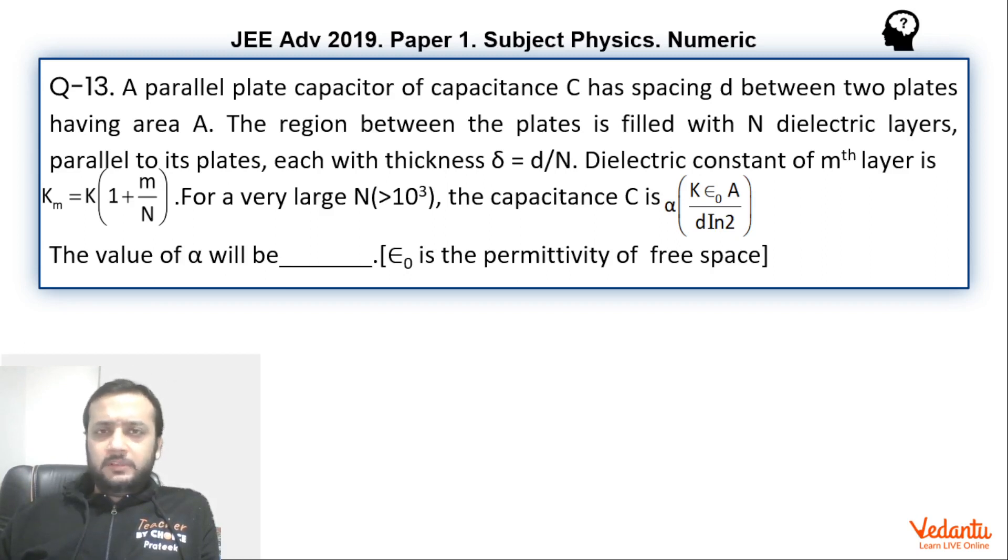I believe most students would have done this question comfortably. Let us see what's happening here. There's a capacitor—the spacing between the plates has been given as d. The region between the capacitor has been filled with N dielectric layers, and each dielectric layer is of thickness d/N.